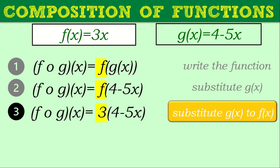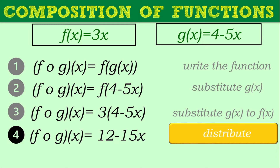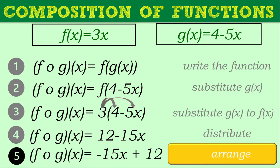Next, we distribute 3 to all terms in the binomial (4 minus 5x). Three times 4 gives us 12, and 3 times negative 5x gives us negative 15x. So we have 12 minus 15x. Arranging in decreasing order of degree, our final answer is f of g of x equals negative 15x plus 12.